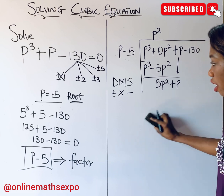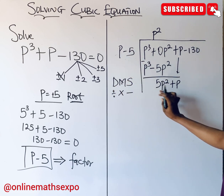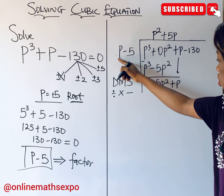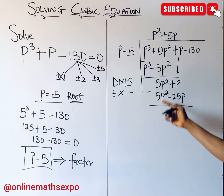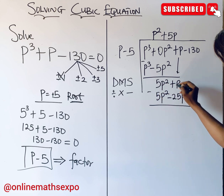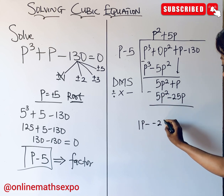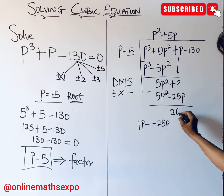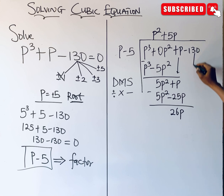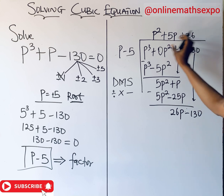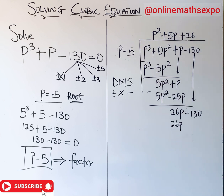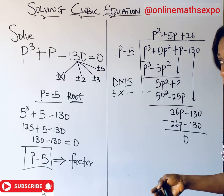Subtracting gives 0 − (−5p²) = +5p². Bring down p. Now divide: p divides 5p² to give 5p. Multiply 5p by (p − 5): gives 5p² and −25p. Subtract: 5p² − 5p² = 0, and 1p − (−25p) = 26p. Bring down −130. Divide: p divides 26p to give 26. Multiply 26 by (p − 5): 26p and −130. Subtract: remainder is zero.